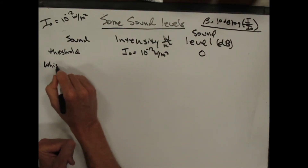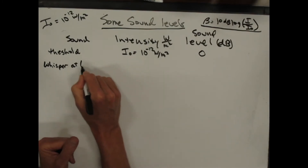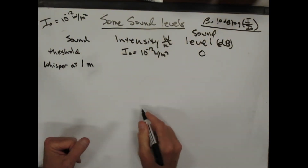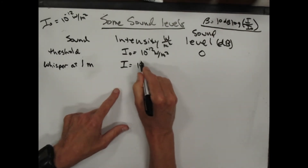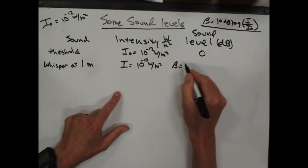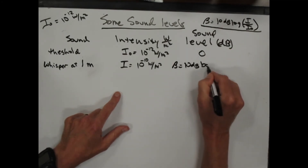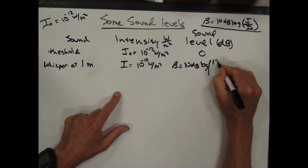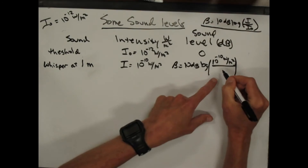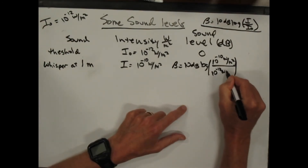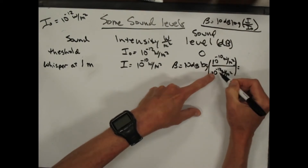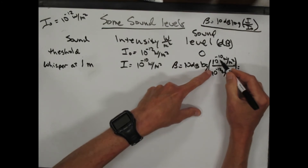The next one is a whisper at one meter — these are just approximate values. The intensity for that is 10 to the minus 10 watts per square meter. So beta equals 10 decibels times the log of 10 to the minus 10 watts per square meter over the threshold 10 to the minus 12 watts per square meter. The units cancel, and 10 to the minus 10 over 10 to the minus 12 is 10 to the 2.